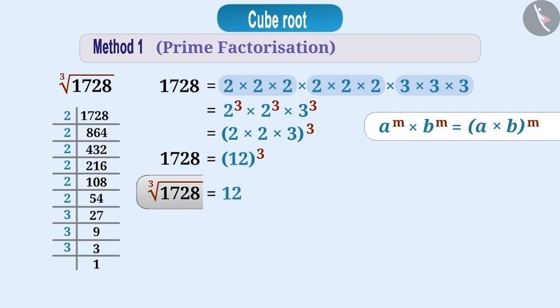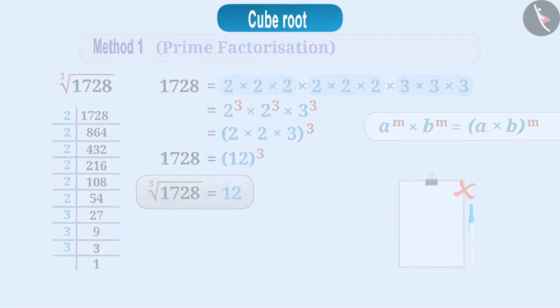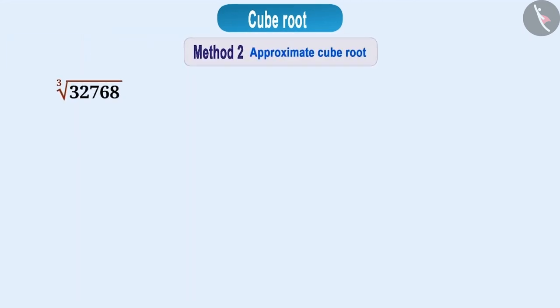Here, the cube root 1728 is obtained as 12. Isn't this a fun method? Would you like to learn another fun method? With this method, you can get the cube root of any perfect cube without paper or pen. So, let's learn about this.